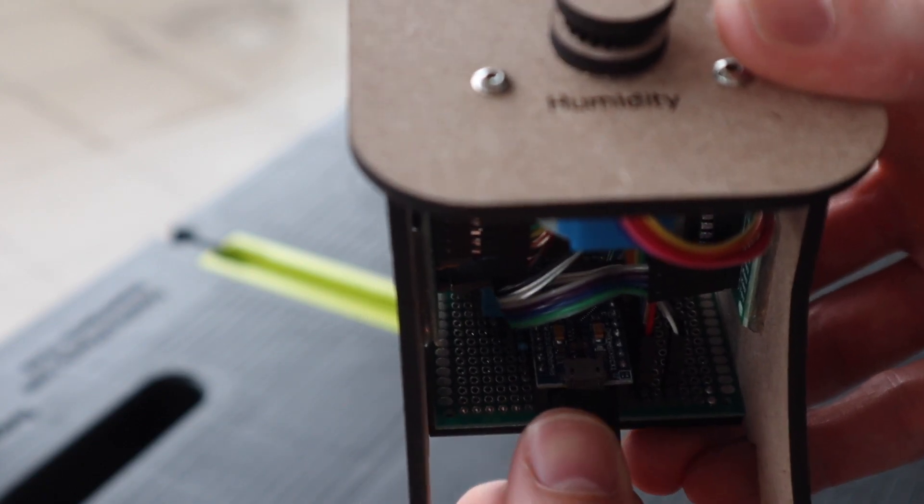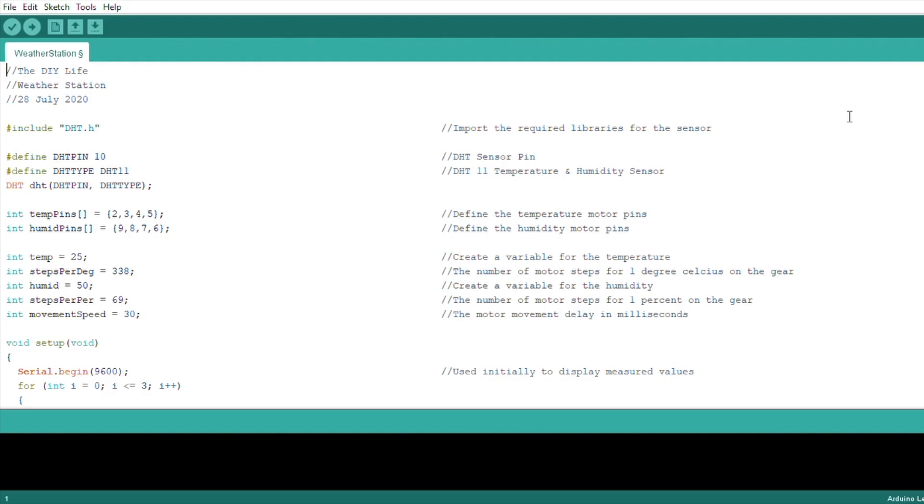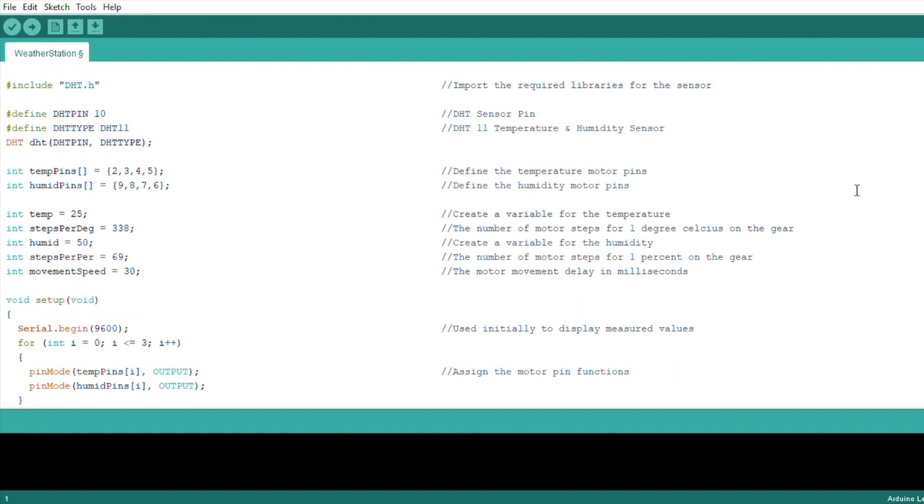Plug your micro USB cable into the bottom of your weather station and you're now ready to upload the code. We start by importing the library for the DHT11 sensor. We then assign the sensor pin and create a sensor object using the correct sensor type.